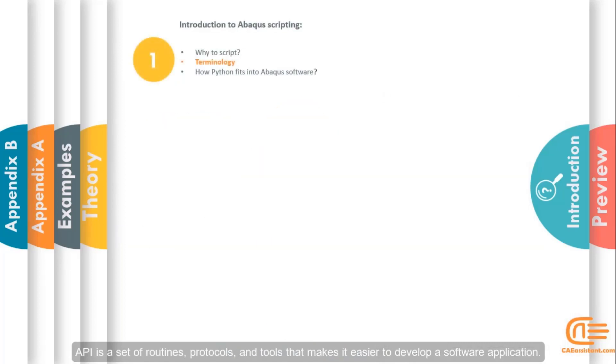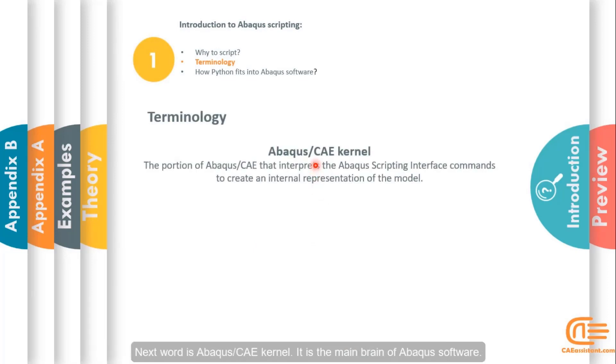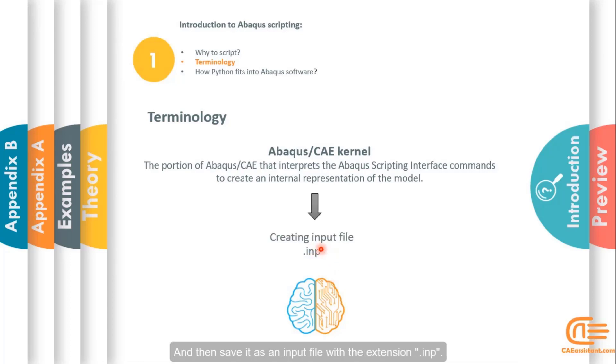API is a set of routines, protocols, and tools that makes it easier to develop a software application. Next word is Abacus CAE kernel. It is the main brain of Abacus software. This gets the script commands and creates an internal representation of the model, and then saves it as an input file with the extension .inp.